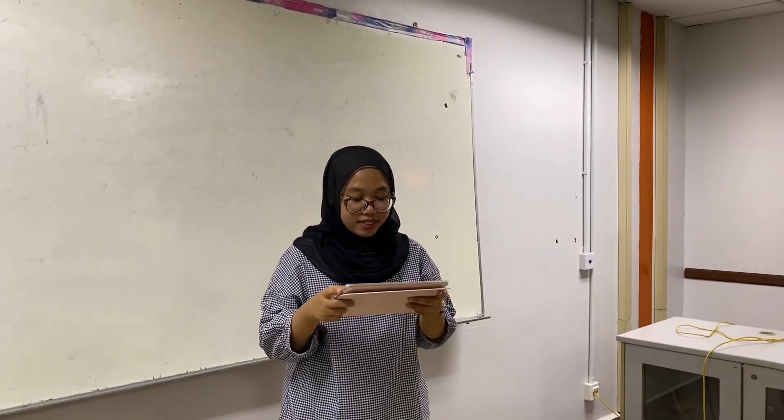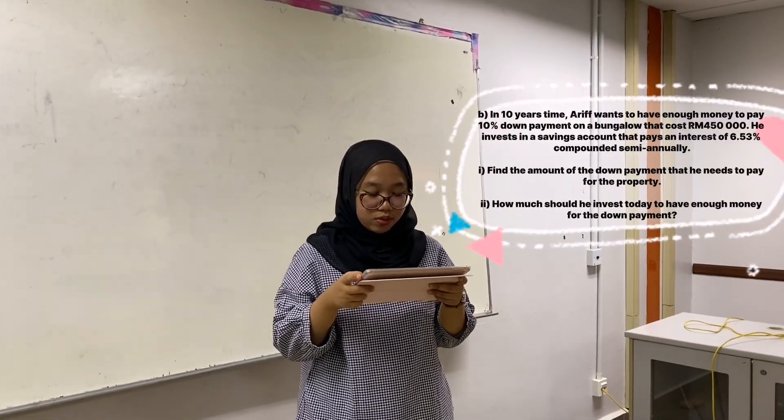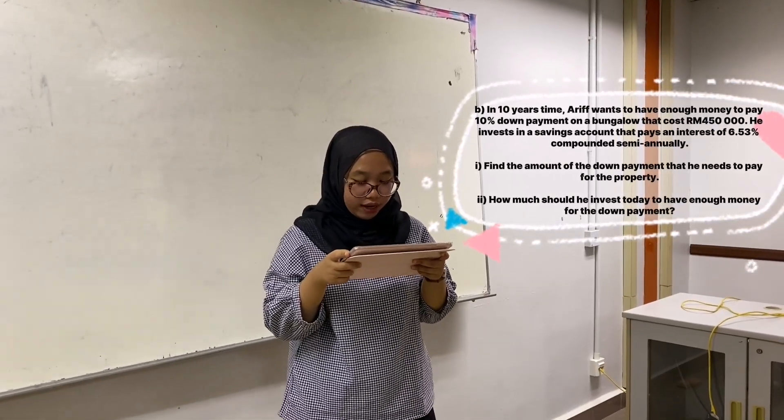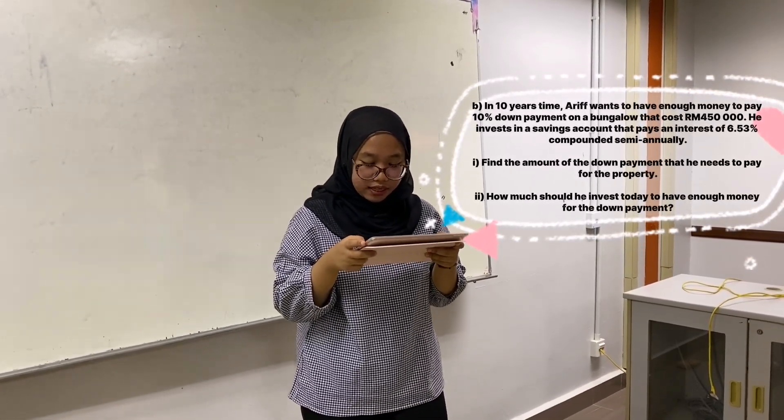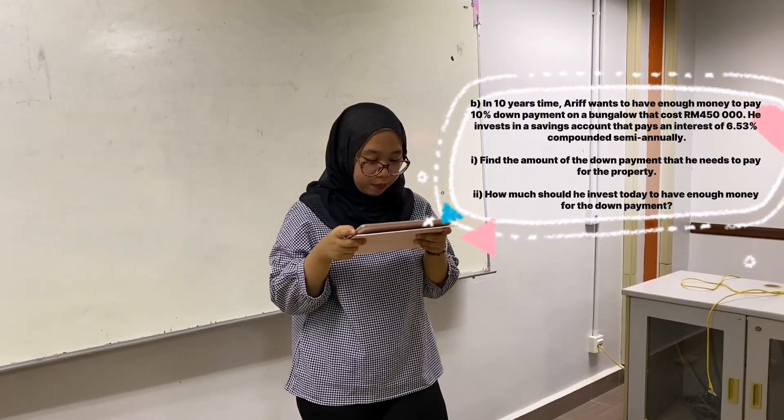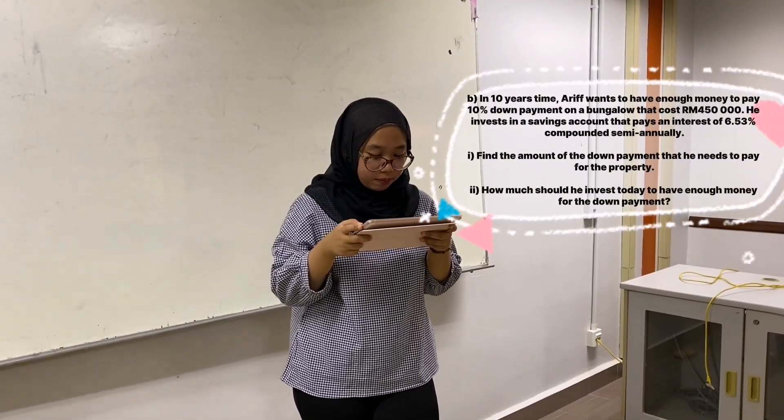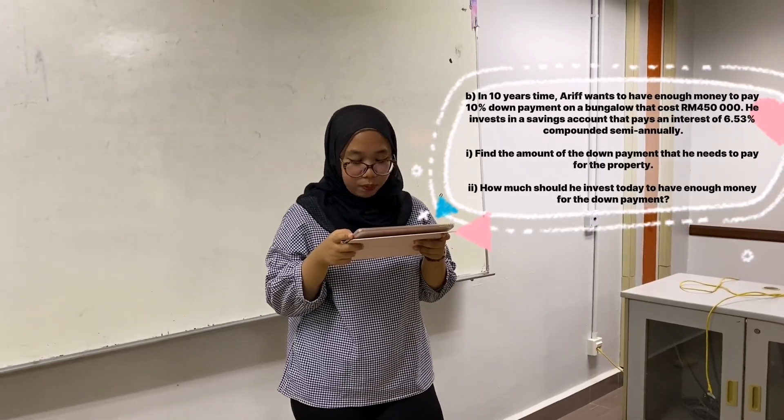Let's take a look at the next question. In 10 years time, Ari wants to have enough money to pay 10% down payment on a bungalow that costs $450,000. He invests in a saving account that pays an interest of 6.53% compounded semi-annually. Find the amount of the down payment that he needs to pay for the property.